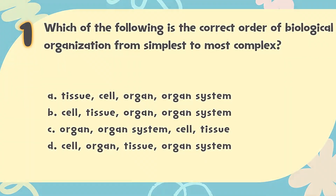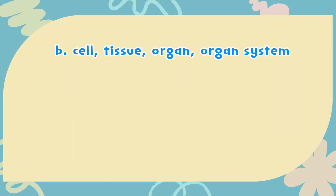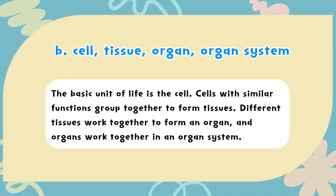The correct answer is B: Cell, Tissue, Organ, Organ System. The basic unit of life is the cell. Cells with similar functions group together to form tissues. Different tissues work together to form an organ, and organs work together in an organ system.